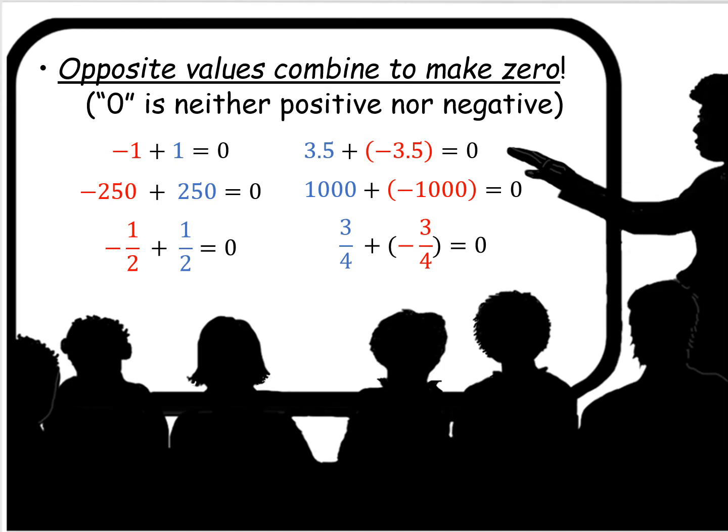3.5 plus negative 3.5: if I start at positive 3.5 and I take away 3.5, I end up with zero. A thousand plus its opposite value of negative a thousand is zero. Three quarters plus negative three quarters equals zero. Can you come up with some real-world examples where this property would apply? This property is called the additive inverse property.